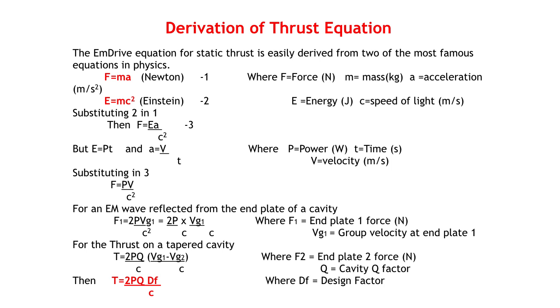The thrust produced by any cavity design can be obtained from a simple thrust equation derived from the classic equations of Newton and Einstein. In equation one, we have F equals MA, where F is the force, M is the mass, and A the acceleration. In equation two, we have E equals MC squared, where E is energy. Substituting equation two in equation one gives equation three, F equals EA over C squared. But E equals PT, where P is power and T is time, and A equals V over T, where V is velocity.